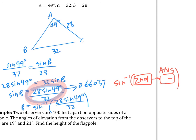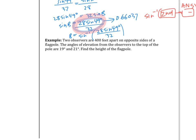The answers are: angle B is 41.328 degrees, angle C is 89.672 degrees, and side c is 42.4.